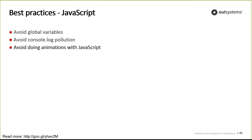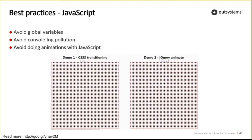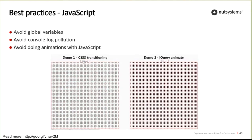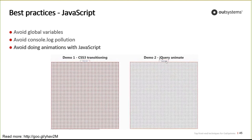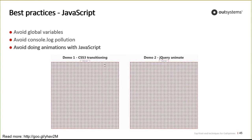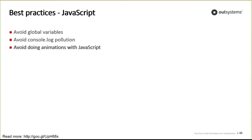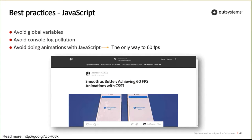Avoid doing animations with JavaScript. Comparing a CSS3 animation to a jQuery animation with the same parameters, the CSS3 version is smooth while jQuery is much more abrupt. The only way to achieve 60 frames per second is using CSS animations, not JavaScript. There is an article by José Rosario called 'Smooth as Butter: Achieving 60 Frames Per Second Animations with CSS3' that explains what CSS to apply and the best approach for creating fluid 60fps animations.